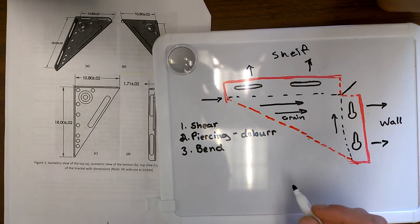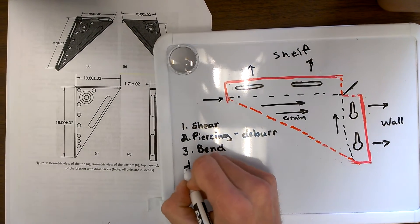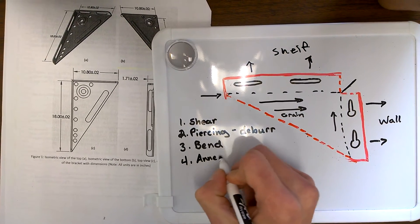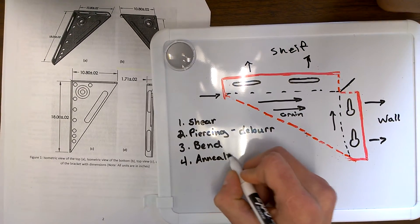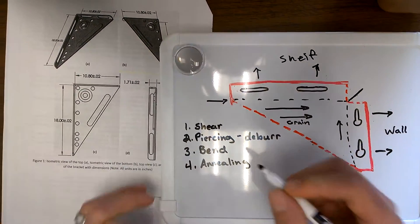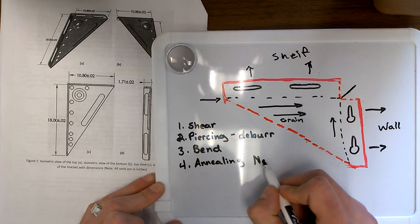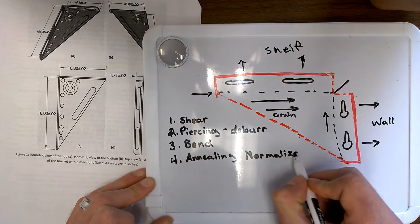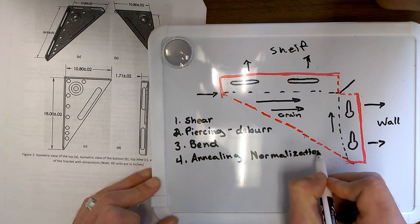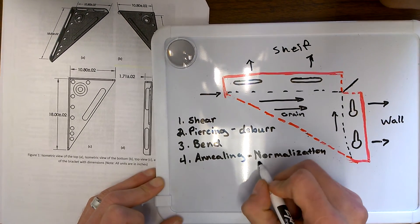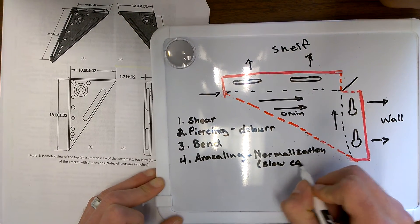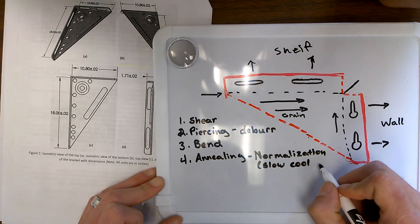Now coming to our fourth step we will be annealing. And using a process called normalization, which is a slow cooling in still air to add strength to our part.